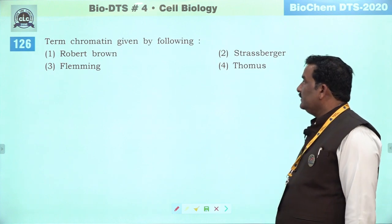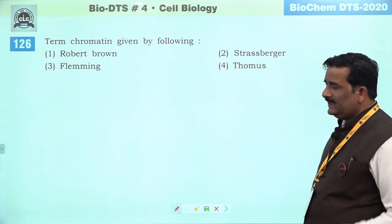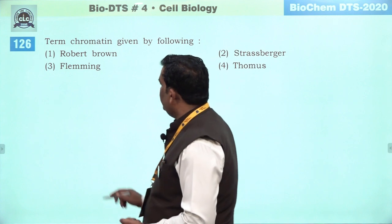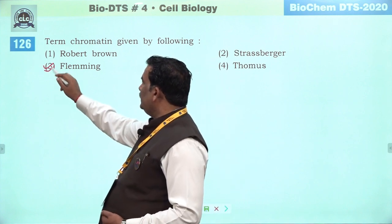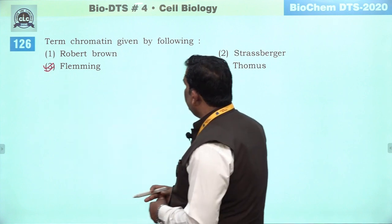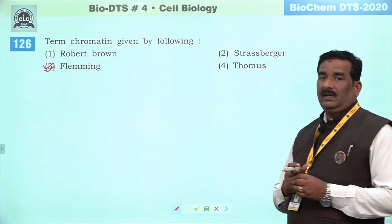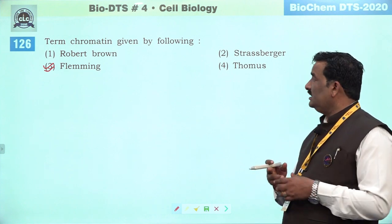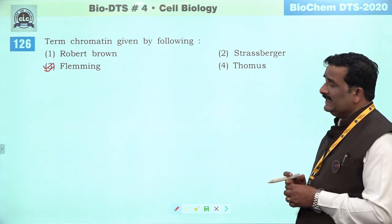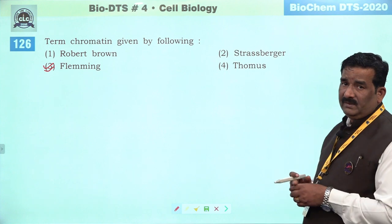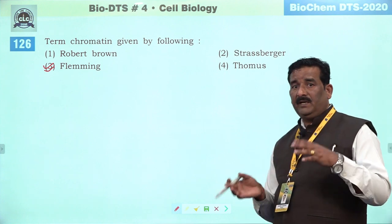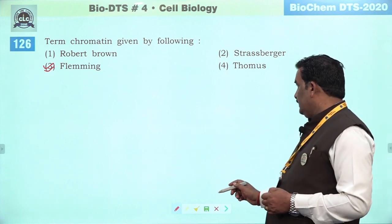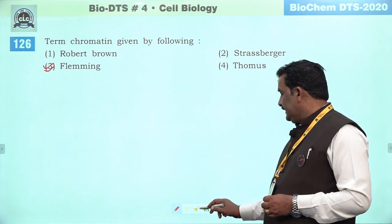Next question: term chromatin — NCRT based information hai, achha question hai. Flemming ke zariye yeh chromatin term diya gaya hai — coloring thread like structure, jinhe chromatin kaha ja raha hai, jo ki interphase mein milte hain — yeh heterochromatin aur euchromatin ke form mein hote hain. Third is right answer.